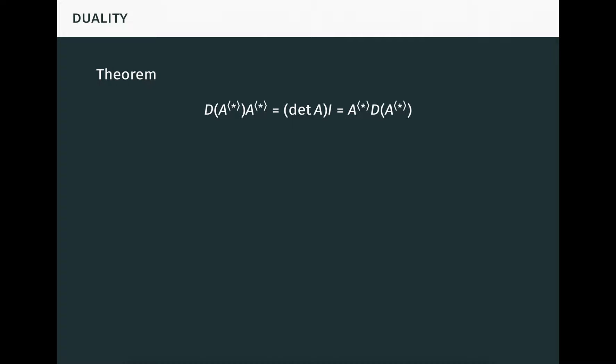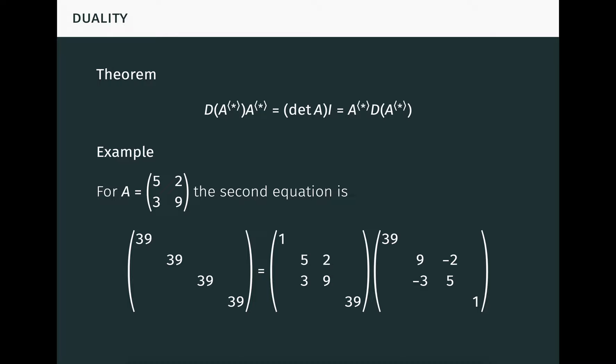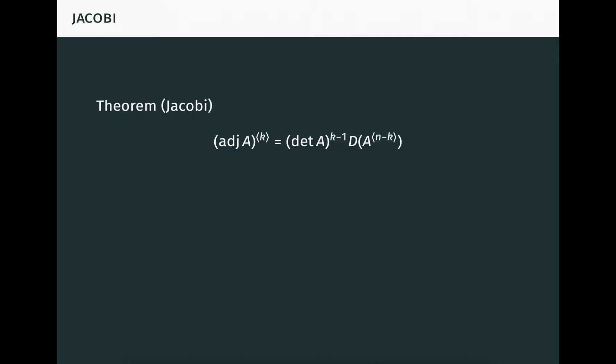We obtain a number of important classical results using this map. For instance, we get this generalization of the relationship between the classical adjoint and the determinant. It's perhaps a little alien-looking, but this result is equivalent to the generalized Laplace cofactor expansion formula for the determinant along any number of rows or columns. As an example, taking A equal to the 2x2 matrix seen here, the second equation in this theorem reads like this. Be sure to pause the video to confirm that you fully understand this example. It makes use of all of the definitions we've presented thus far. The dual map can also be used to express Jacobi's identities for the minors of the adjoint as a duality relationship between compound powers. Taking k equal to n and n minus 1 in this theorem yields the determinant of the adjoint and the adjoint of the adjoint, things that every schoolboy wonders about.